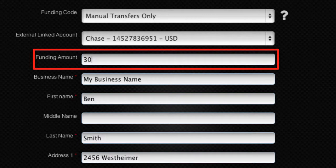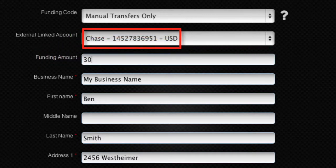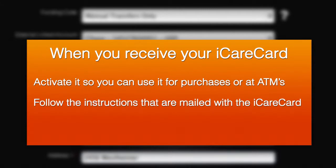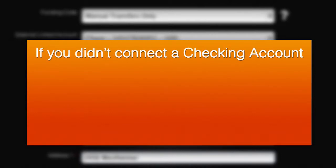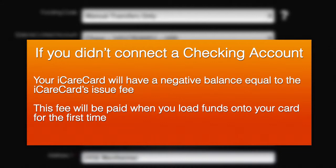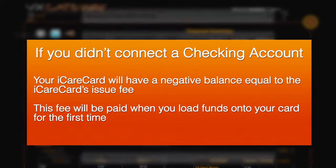The funding amount you entered in the enrollment form will now be debited to your checking account and cleared to your iCare Card account in approximately two business days. When you receive your plastic iCare Card in the mail, activate it so you can use it for purchases and at ATMs. Follow the instructions that are mailed with your iCare Card. If you didn't connect a checking account in the enrollment process, your iCare Card will have a negative balance equal to the iCare Card issue fee. This fee will be paid when you load funds onto your card for the first time.